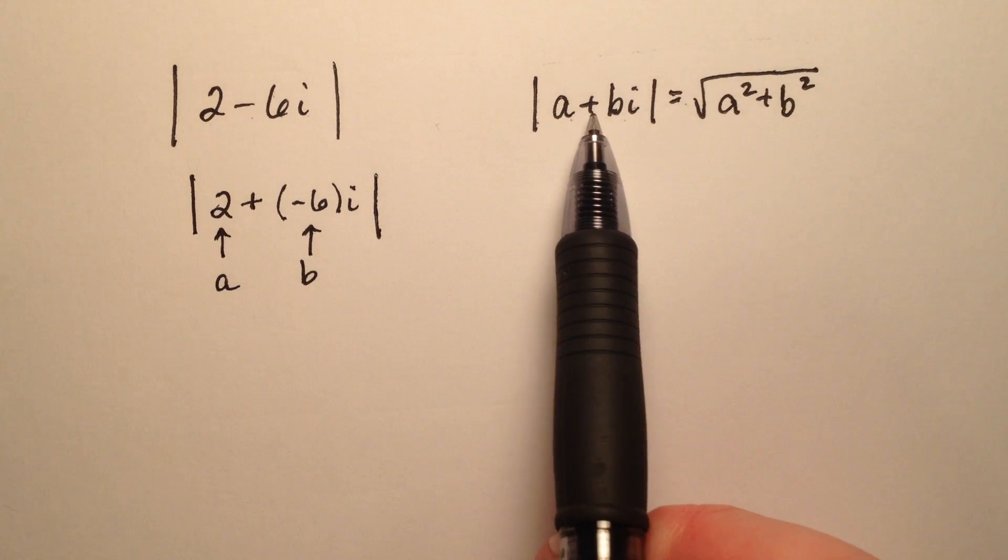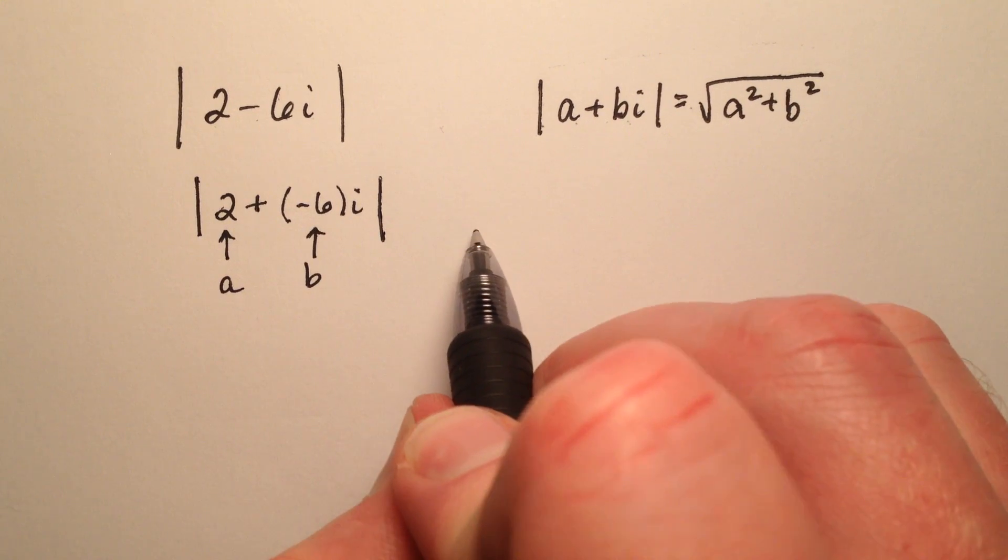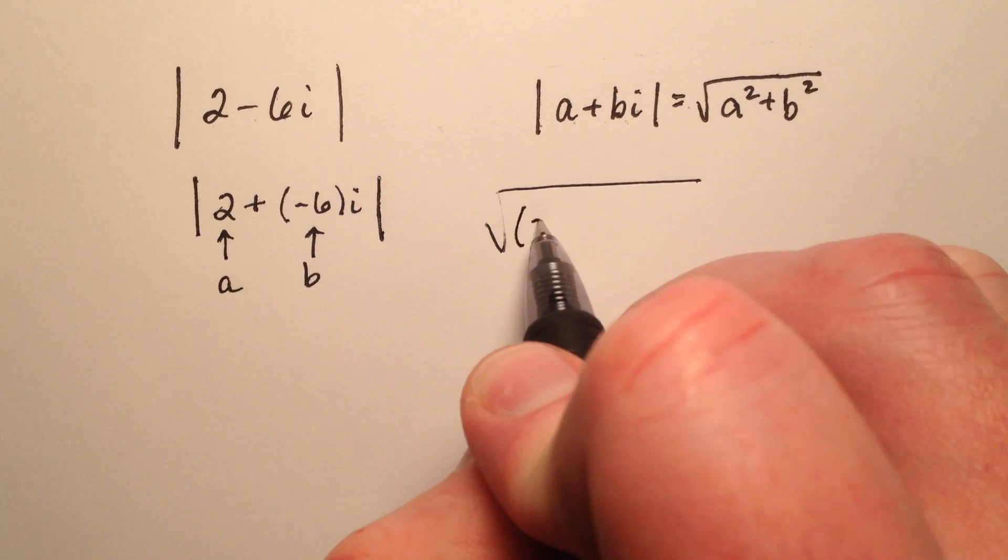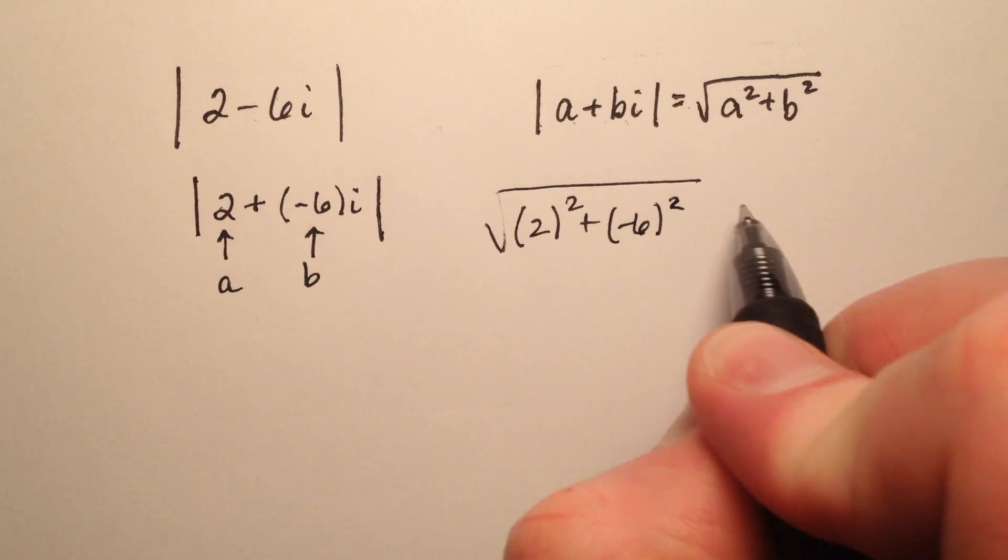So the absolute value of a plus bi, in this case a is 2 and b is negative 6, is just going to be the square root of 2 squared plus negative 6 squared.